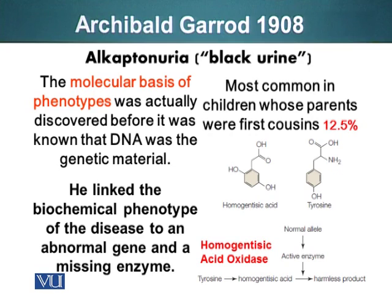The name of that protein is homogentisic acid oxidase. It converts tyrosine into homogentisic acid, which is then converted into a harmless product. Low levels of homogentisic acid can be tolerated, but if this enzyme, homogentisic acid oxidase, is missing or non-functional, homogentisic acid will accumulate and cause damage. This gentleman was able to link the biochemical phenotype of a disease to an abnormal gene and a missing enzyme.